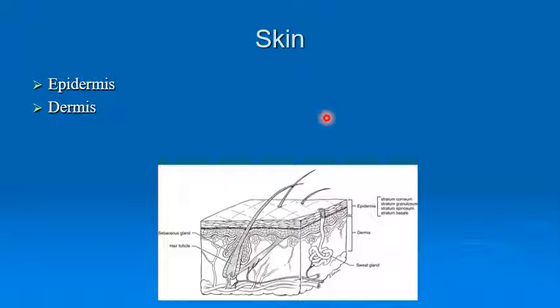The dermis is made up of a strong yet flexible connective tissue, and you can see throughout the dermis there's various structures located there. You have your hair follicles, your sweat glands, and your sebaceous glands which release oils. You have them everywhere except the skin on the palms of your hands and on your feet.